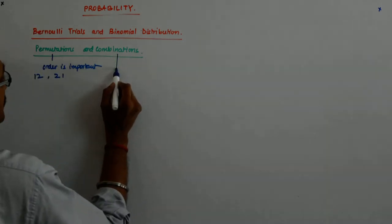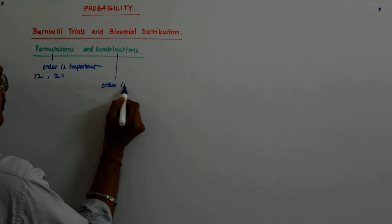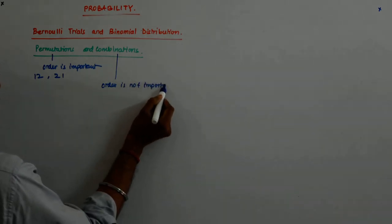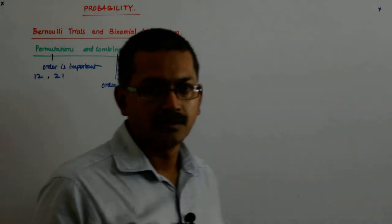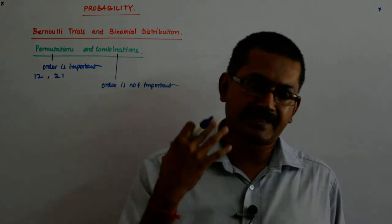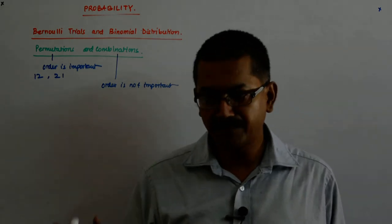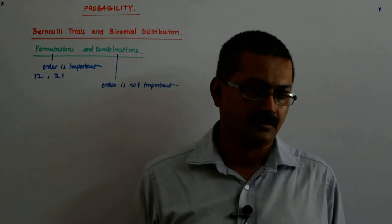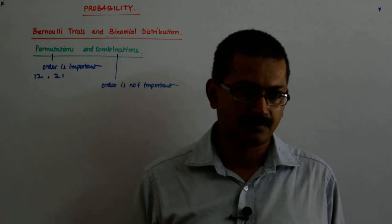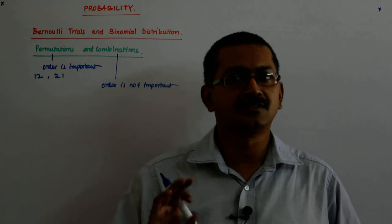Combination is: order is not important. See, the same 2 people, if that is the jersey number of 2 people, 1 and 2, and you are selecting them for a team, 1-2 forms the same team as 2-1. So this is the simplest difference between permutation and combination, and this is the only difference.